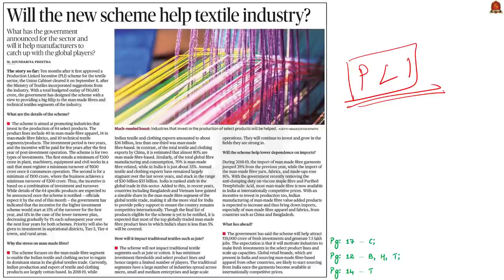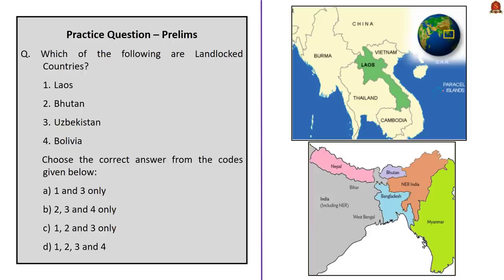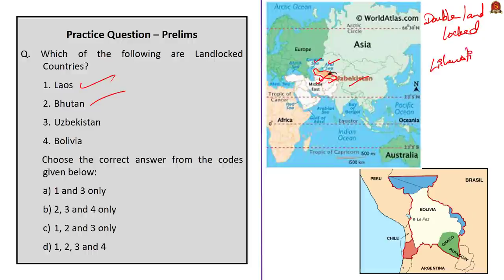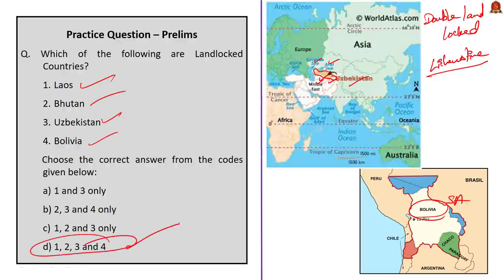We have four practice questions — let us go over them one by one. The first question asks which of the following countries are landlocked. From our Myanmar discussion, we came across Laos — it is landlocked. Our neighbors Bhutan and Nepal are landlocked. Consider Uzbekistan — it is called a double landlocked country because the countries surrounding Uzbekistan are also landlocked. The world has only two double landlocked countries: Uzbekistan and Liechtenstein. Bolivia is one of the landlocked countries from South America. So all four — Laos, Bhutan, Uzbekistan, and Bolivia — are landlocked, and the correct option is option D: 1, 2, 3, and 4.